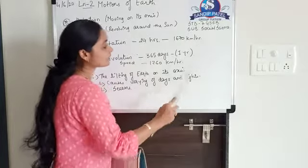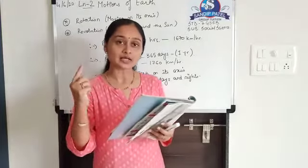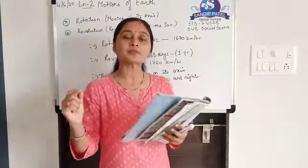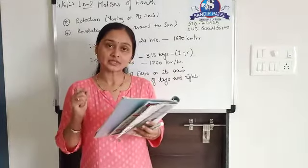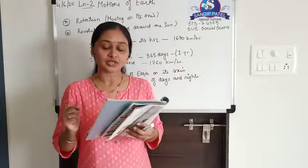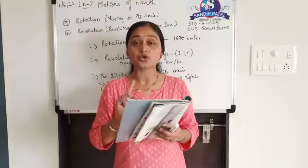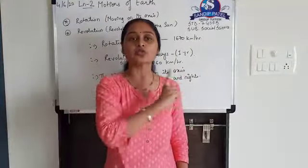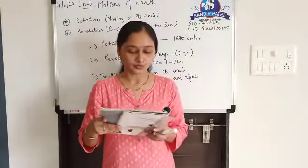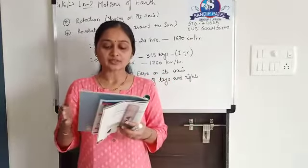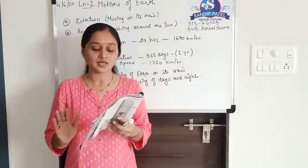Earth moves continuously on a fixed imaginary path called an orbit. The orbit of the earth is not round — it is tilted and oval-shaped, which means elliptical. This is the reason why the distance between the earth and the sun does not remain the same throughout.